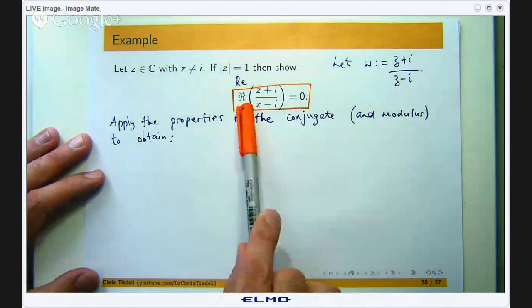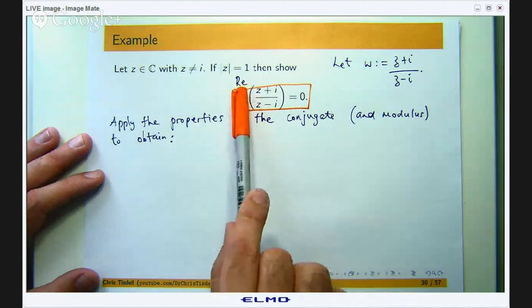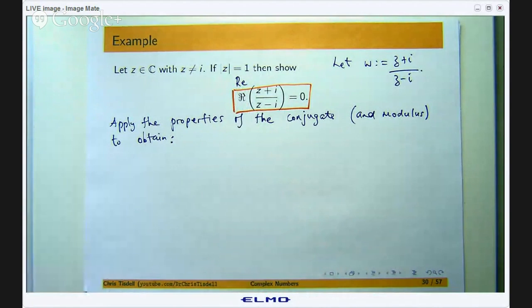Now usually when I type these things out I put this curly R in. Some people and indeed when I write it out by hand I put the Re for the real part. So the way we are going to do this is going to use properties of the conjugate and the modulus.